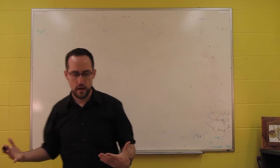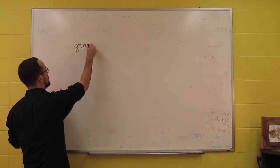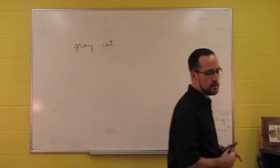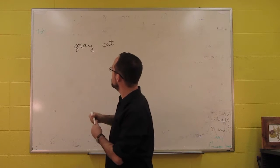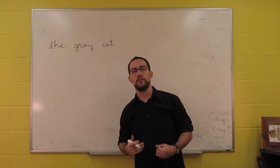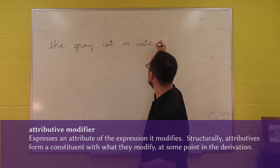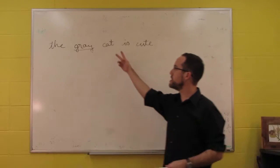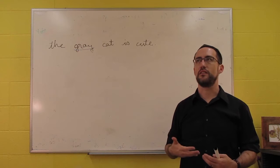When we think about modifiers, the classic category is the adjective. We have something like gray, which is an adjective, and if we use it to modify a noun like cat, we get gray cat. The use of an adjective or a modifier to add additional information about something we're talking about is what's called an attributive use. So if we say the gray cat is cute, then the use of this modifier is attributive — it's helping us specify which cat we're talking about, but it's something we're already taking as given.